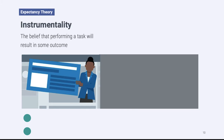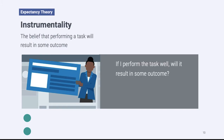The second component of expectancy theory is called instrumentality — basically the belief that if someone performs a task, it will result in them getting some outcome. The outcome doesn't have to be positive or negative; we're just saying if I perform a task, then some outcome will occur. If I believe there is a link between my performance and some outcome, it will lead to motivation. If I think there is no link between how hard I work and some outcome, I'm not going to feel motivated.